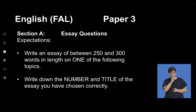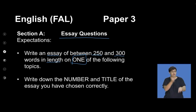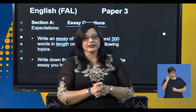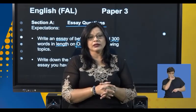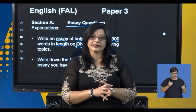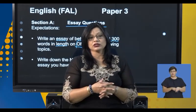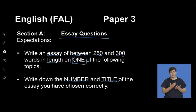Let's look at section A, which is your essay questions. In section A, you are required to write an essay of between 250 to 300 words in length on one of the following topics — this is an instruction taken directly from past year question papers for paper 3 English first additional language. You need to ensure you choose a question that you can relate to and write on. 250 to 300 words is a lot of writing, so you need to manage yourself, have different ideas and scenarios, and avoid being repetitive in a creative response because it becomes very dull and boring. Write down the number and title of the topic or essay you have chosen.